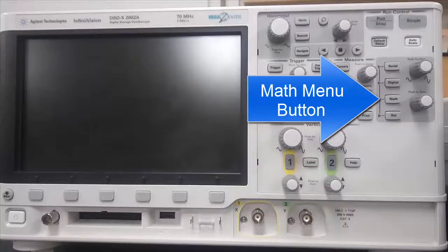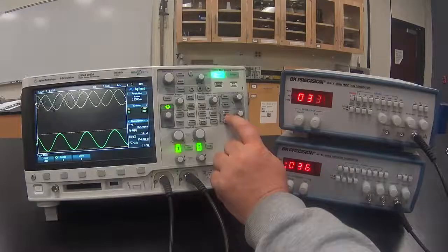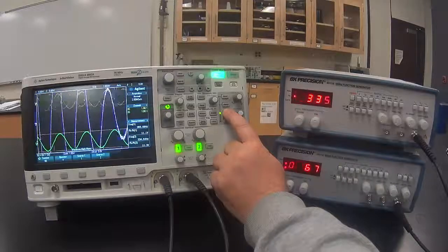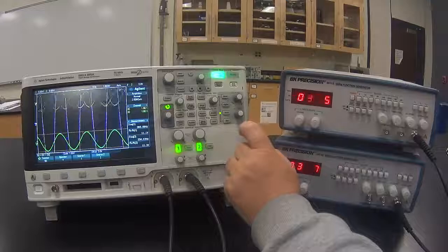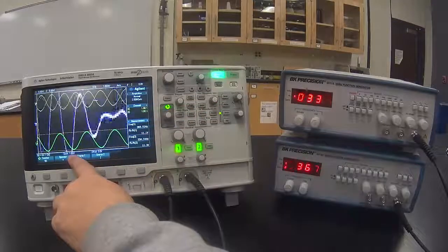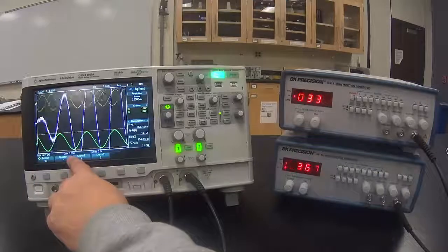Next we will use the Math Menu button. When I press the button, it adds the two signals together. Now they are not the same number of volts per division, so I have to adjust it to match the other two signals.